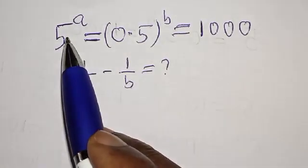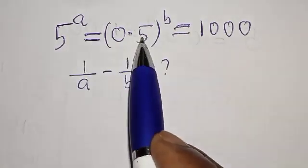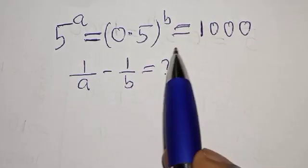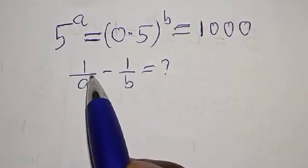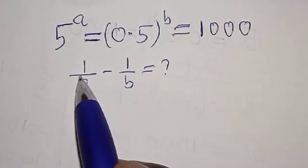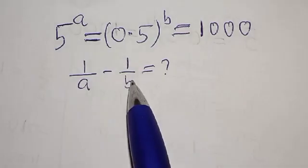5 raised to power a is equal to 0.5 raised to power b is equal to 1000. What is the value of 1 over a minus 1 over b?